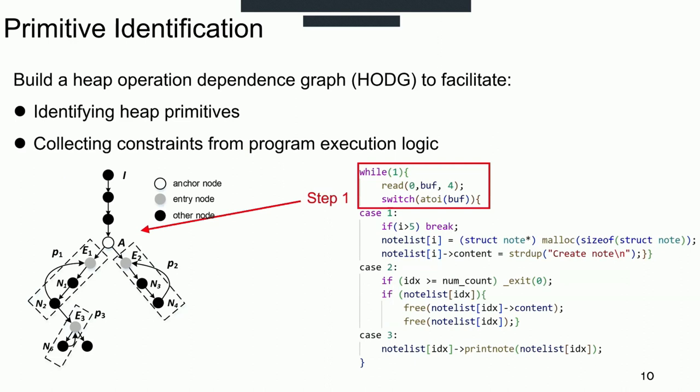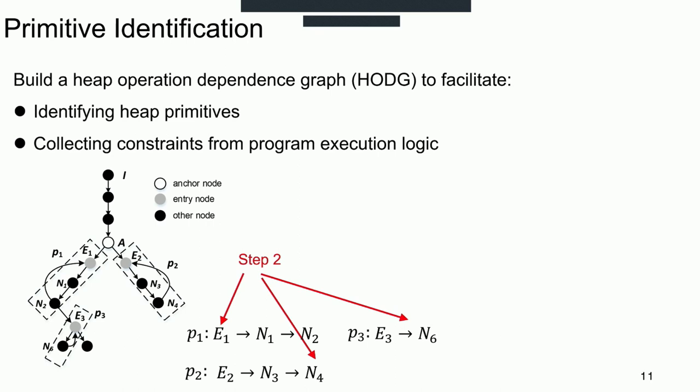First, we introduce how to identify primitives. We identify the primitives and collect constraints from heap operation-dependence graph, which is constructed by customized tracer. Based on the graph, we first locate the anchor node in the graph. The anchor node is the entry of the loop structure in the program. Then we identify the entry nodes, which are successors of the anchor node, and the heap operations between two entry nodes belong to the same primitive. In this graph, we could extract 223 primitives.